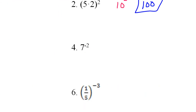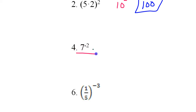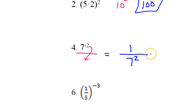If you have a negative power, that means we have to move this to the other side of the invisible fraction. So this is going to become 7 squared in the bottom, and in the top I'll need a 1 — so 1 over 7 squared. If it was squared or cubed we would go ahead and compute it; anything higher we can leave it.